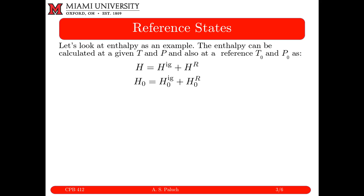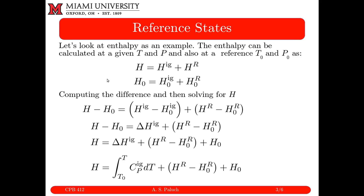H is equal to H_ideal_gas plus my residual enthalpy H_R. At the reference state, H₀ is equal to H₀_ideal_gas plus H₀_residual. So if we compute the difference, H minus H₀ is the difference in my ideal gas values and my residual values: H minus H₀ equals ΔH_ideal_gas plus H_R minus H₀_R.